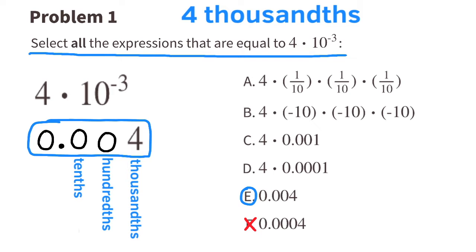It is equal to E, which is 4 thousandths, and not equal to D, which would be equal to 4 ten-thousandths. It is equal to C, which would be 4 thousandths. It is not equal to B, because that wouldn't be a decimal — that's just negative 4 thousand.